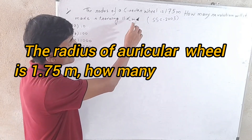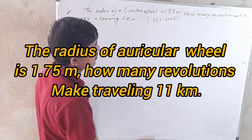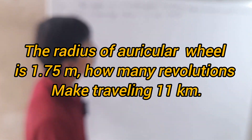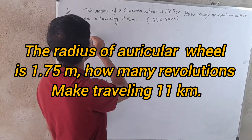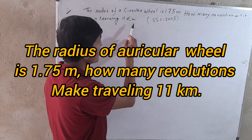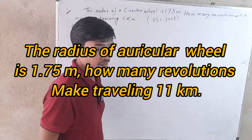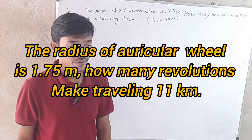The radius of a circular wheel is 1.75 meters. How many revolutions will it make in travelling 11 km? This is a problem from SSC 2000.